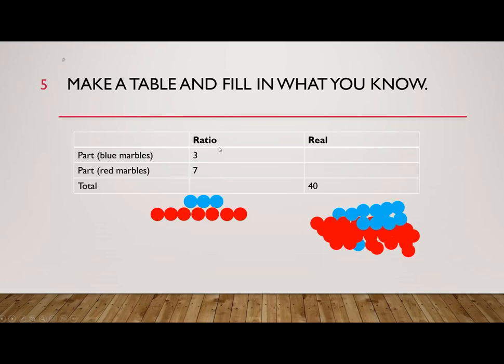Start with a column for ratio and a column for real, and then the rows are the part, blue marbles, the part, red marbles, and the total.